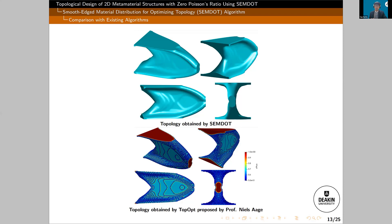However, we cannot conclusively say SimDot is better than these conventional methods, because we need to test more cases — for example, multi-physics optimization problems. We need more evidence. That's the work we are currently working on.